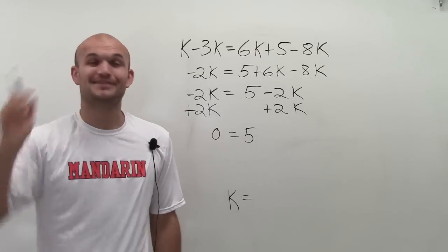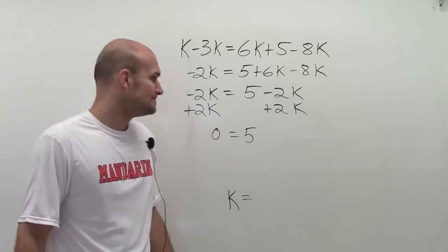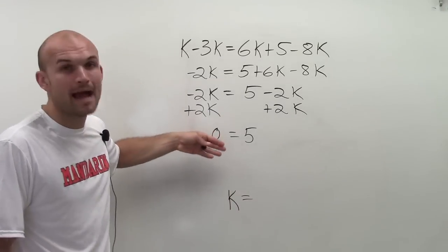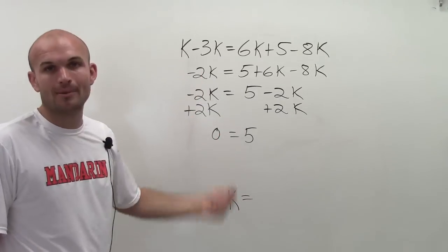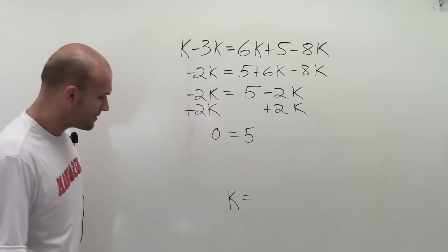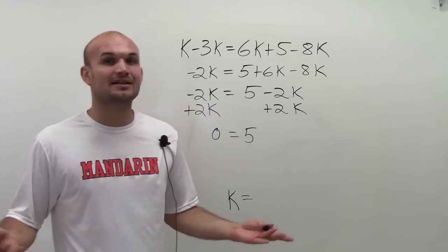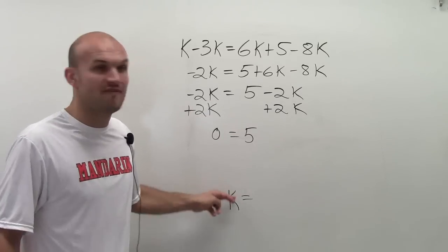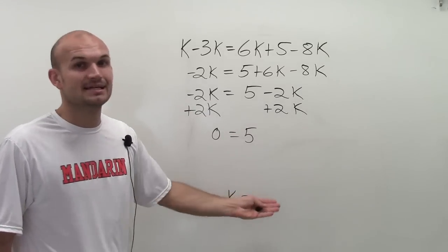And what I have is 0 equals 5. So I start thinking, does 0 equal 5? That's false. I tried to solve, tried to get k equals something, but it didn't happen. I actually eliminated all my k's. I'm not going to get exactly one solution for this problem. I have no solution. There's no value that I say k is equal to.